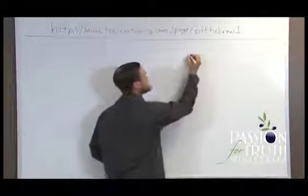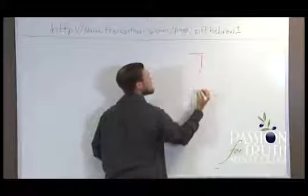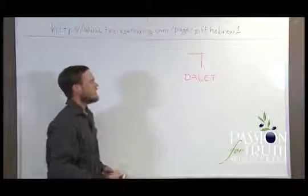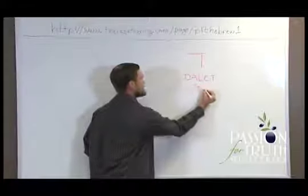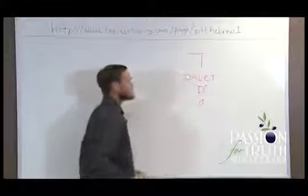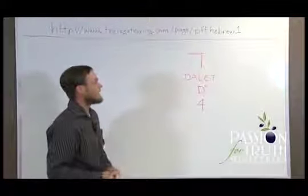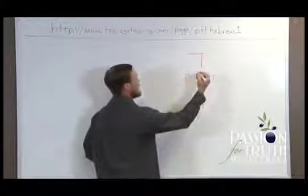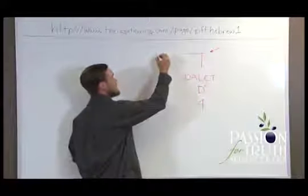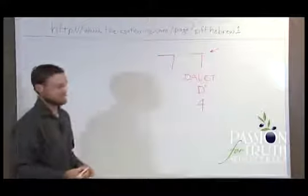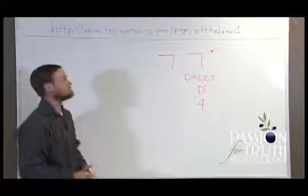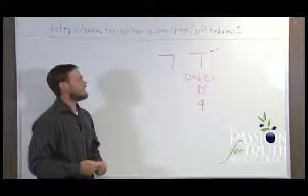The fourth letter is Dalet. Dalet makes the sound of the letter D, as in dog. Being the fourth letter, its numerical value is four. Like the Gimel and the Beit, you have to pay attention to this little tail on the Dalet, on the top right, because that is the only thing that differentiates the Dalet from the Resh. And these two letters are the most frequently mixed up, one for the other. So, don't feel bad if you mix them up.